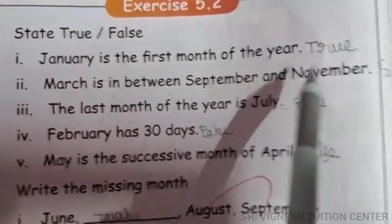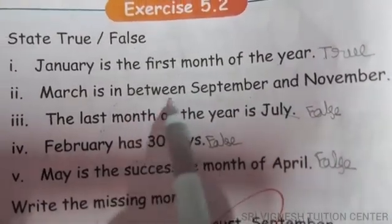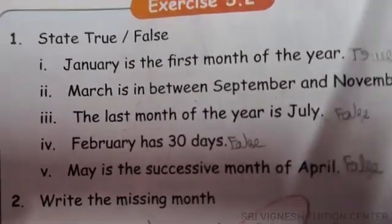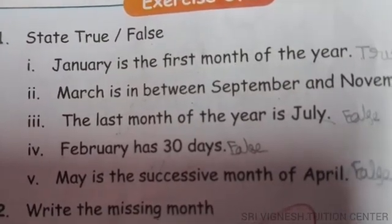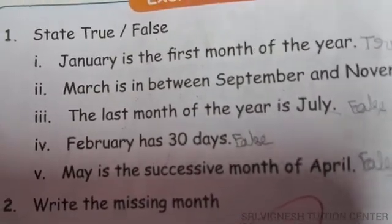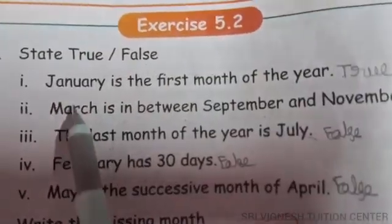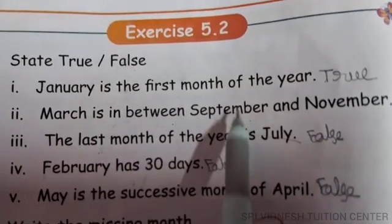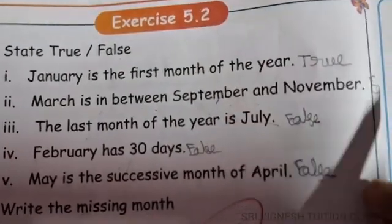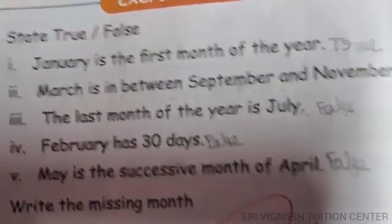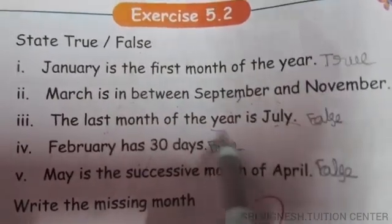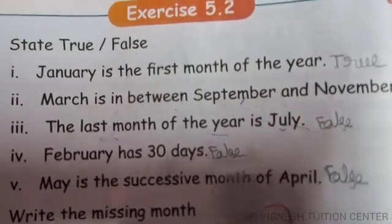Next statement: March is in between September and November. The months in order are January, February, March — so March is not between September and November. That is false.